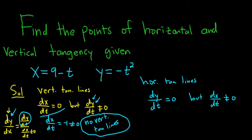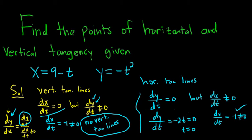So dy/dt equals 0, but dx/dt is not 0. So in this case, dy/dt is negative 2t. If we set that equal to 0, we simply get t equals 0. And dx/dt, we just have to make sure it's OK. We already worked it out. We got negative 1. So that's not equal to 0. So this is good. We got it. So this condition is satisfied. We have dy/dt equals 0, and dx/dt is not equal to 0. So that means that we have a horizontal tangent line at t equals 0.